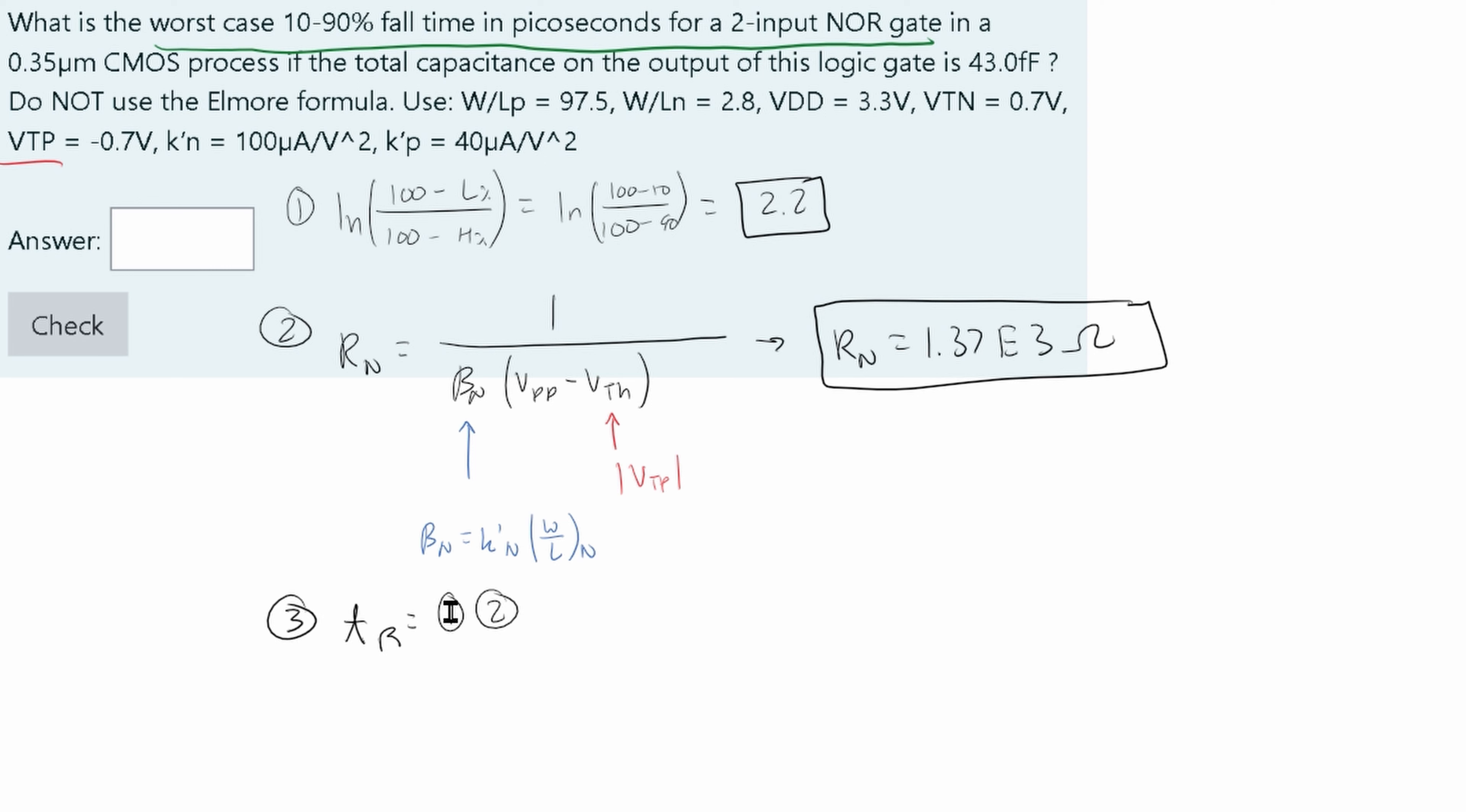The next thing we're going to multiply by is the capacitance out. The capacitance on the output of this logic gate is 43 femtofarads. For this problem, we have 2.2 times 1.37 times E to the third, and then 43 times E to the negative 15 because that is femtofarads.